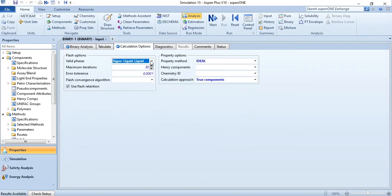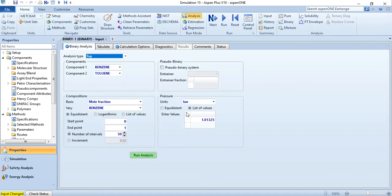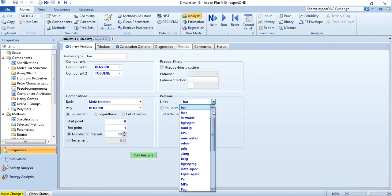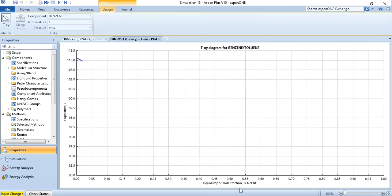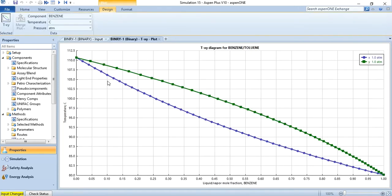In calculation options, first selected as vapor liquid and in binary analysis let me take you first pressure only that it's 1 atm. Because what we have done earlier we need to discuss it and run analysis. Once you run analysis then you see you have this graph.